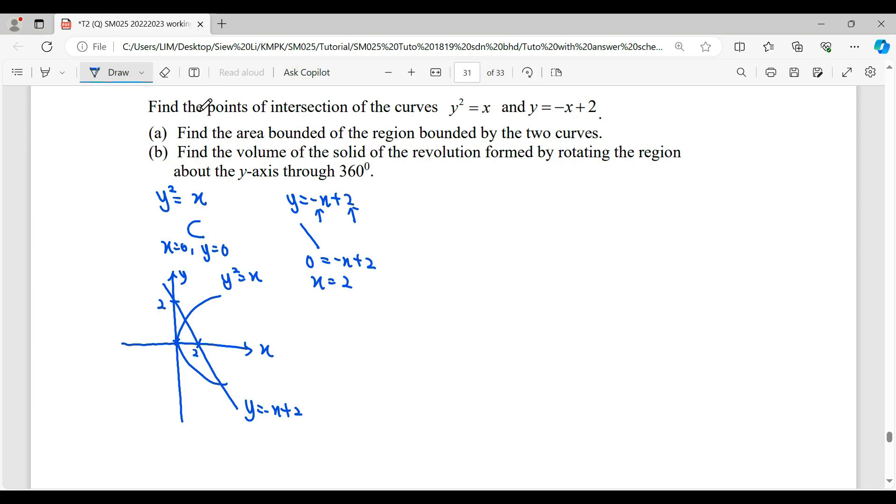For the first question they ask you, find the point of intersection which is this one and this one. So to find the point of intersection, we need simultaneous equations. This is equation 1 and this one we let it equation 2. Then we substitute 1 into 2.